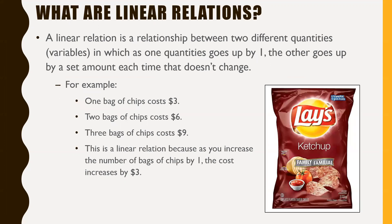Big question: what are linear relations? A linear relation is a relationship between two different quantities — or variables — in which as one quantity goes up by one, the other one goes up by a set amount each time that doesn't change. It's way easier to see this with an example.